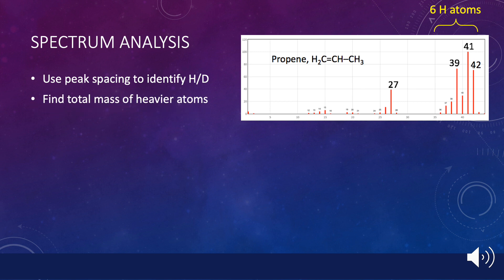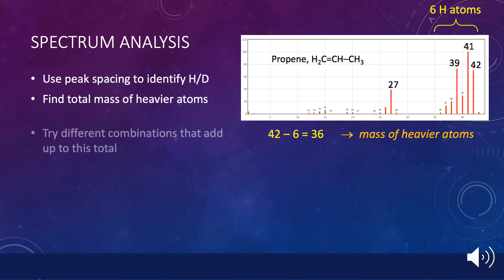Next, you would find the total mass of the heavier atoms in the molecule by subtracting the mass of the hydrogen atoms from the total mass. Here, that would give us a total mass of 36. There are only a couple of possible combinations of heavier atoms that can be combined to add up to 36. We can either have three carbon atoms of mass 12 or two oxygen atoms of mass 18, one of its heavy isotopes.